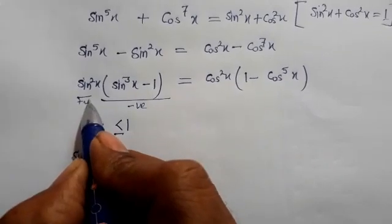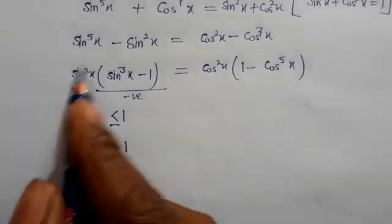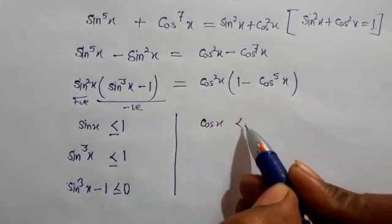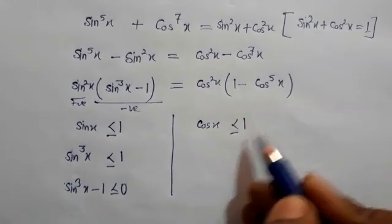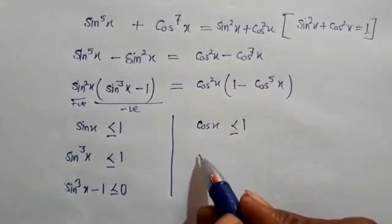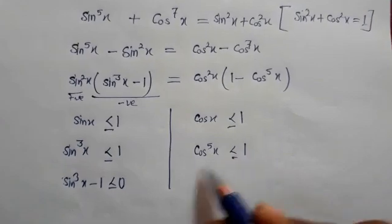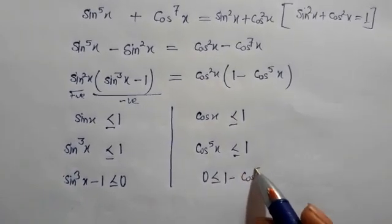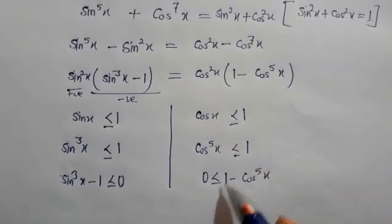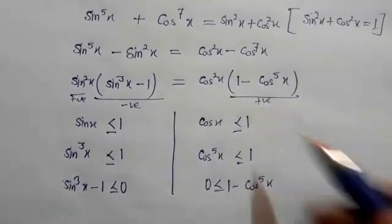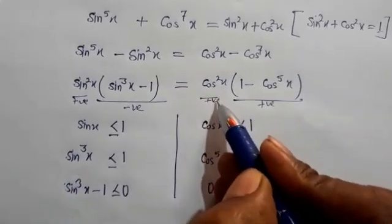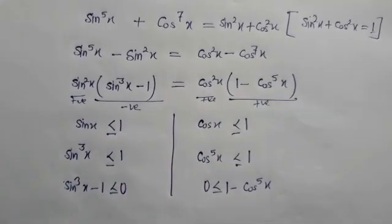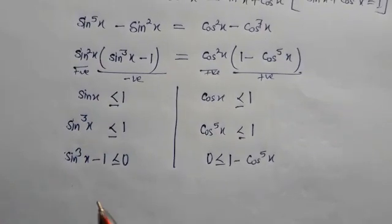So sin²x is positive and (sin³x - 1) is negative — negative times positive gives a negative result on the LHS. In the same way, cos x is also less than or equal to 1, so cos⁵x is also less than or equal to 1, meaning 1 - cos⁵x is greater than or equal to 0, which is positive. cos²x is also positive (square is always positive), so the RHS is positive. Since positive and negative are not equal, for equality to hold, each factor must be zero.